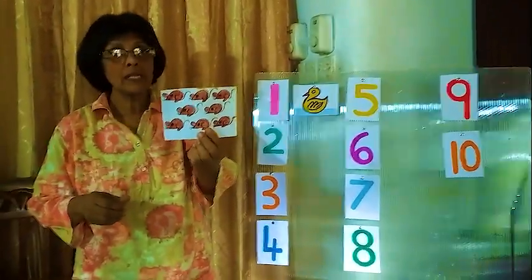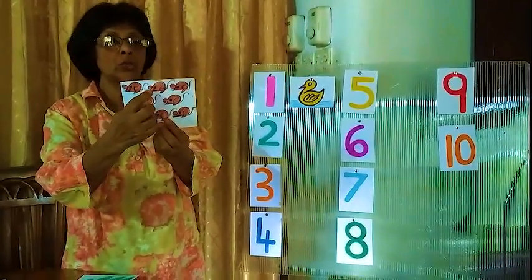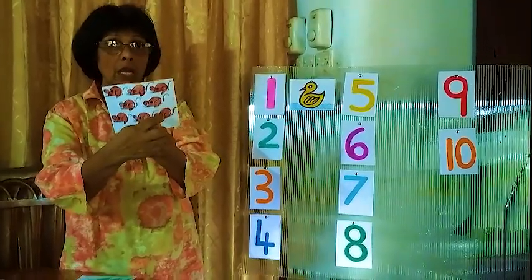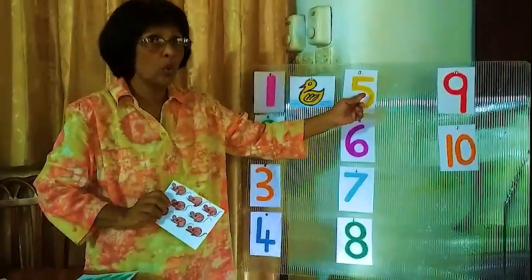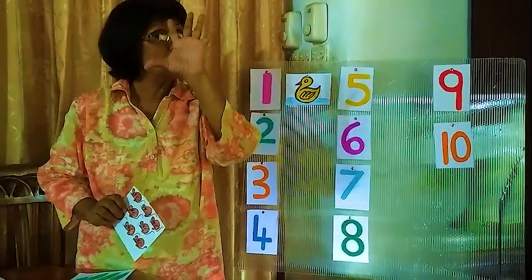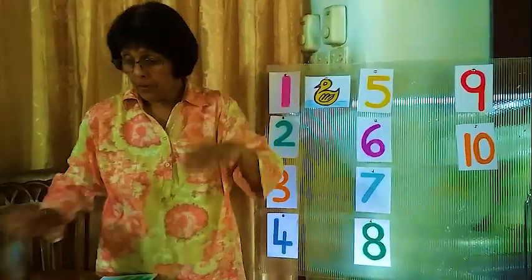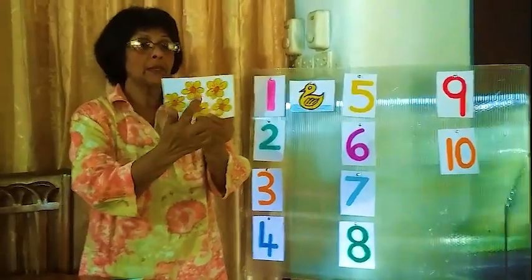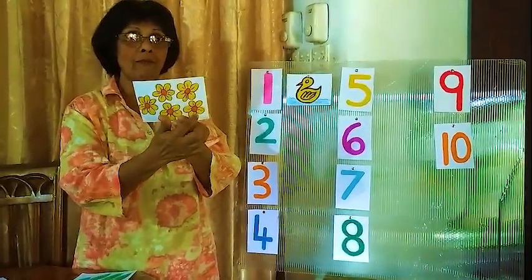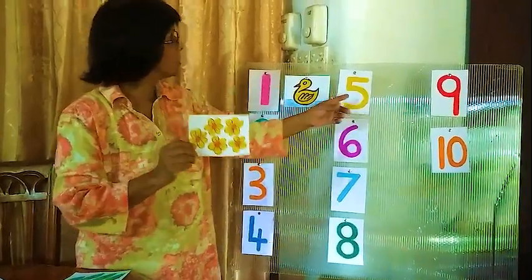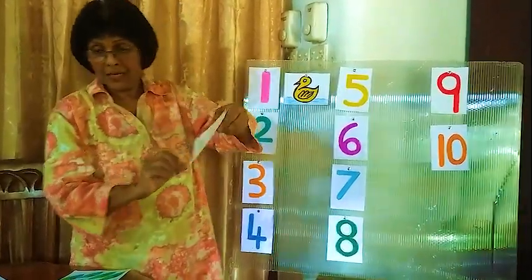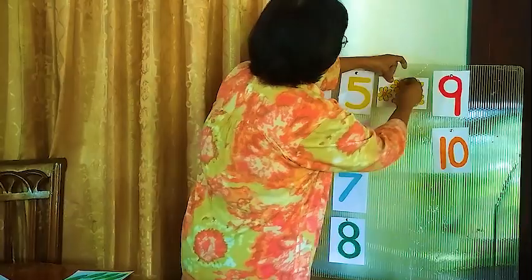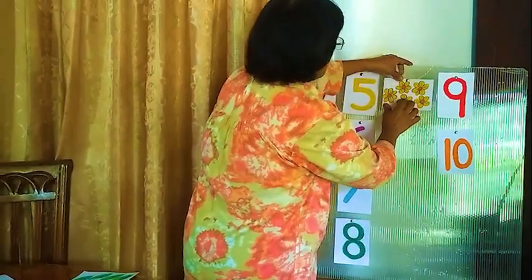Here, we will see how many birds: 1, 2, 3, 4, 5, 6, 7, 8. Is this 8? No. This is number 5, so we have to find 5 pictures. This one: 1, 2, 3, 4, 5. Is this correct? Yes! This is number 5 — 5 flowers. This is correct, so we will fix it here. Number 5, 5 flowers.